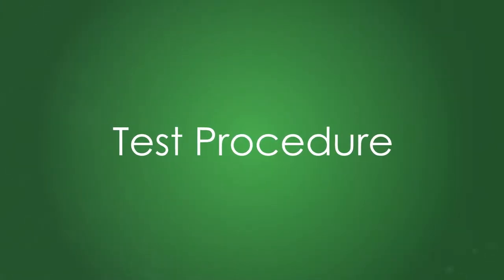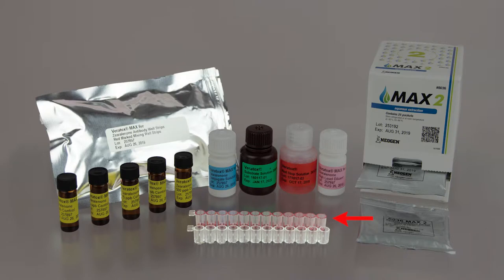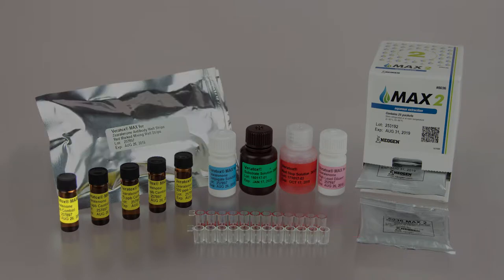Each Veritox Max for Zearalenone kit contains 48 red marked mixing wells, 48 clear antibody coated wells, and 5 yellow labeled bottles of 0, 25, 75, 150, and 500 ppb Zearalenone controls.